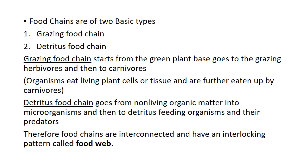Food chains are of two basic types: grazing food chain and detritus food chain. Grazing food chain starts from the green plant base, goes to the grazing herbivores and then to the carnivores. Organisms eat living plant cells or tissues and are further eaten up by the carnivores. Detritus food chain goes from non-living organic matter into microorganisms and then to detritus-feeding organisms such as snails, earthworms and smaller organisms, which are then eaten up by their predators, for example birds.